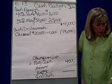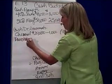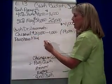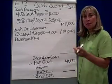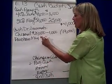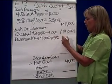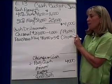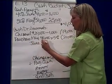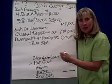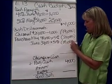Part D talks about inventory purchases. It says I'll pay for half of my purchases in the month of purchase and half in the month following. In May, I purchased $40,000 and only paid 50% of that, which is $20,000. So I'm paying for the other half of May's purchases in June — that's $20,000. For June, my purchases were $30,000, and I'm going to pay half of that, or 50%, which means I'll pay $15,000 of June's purchases in June.